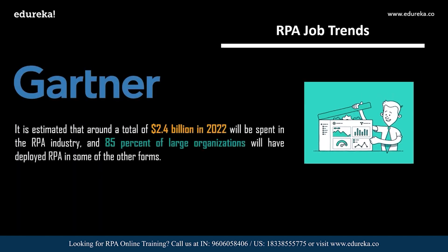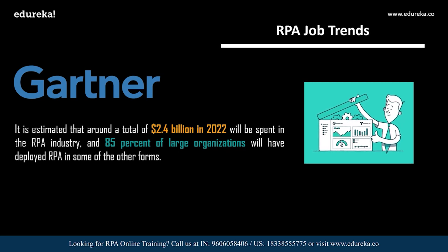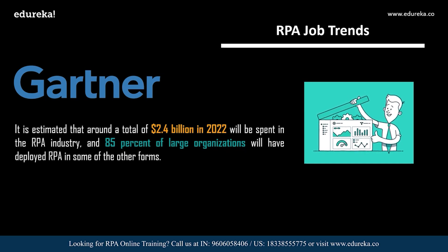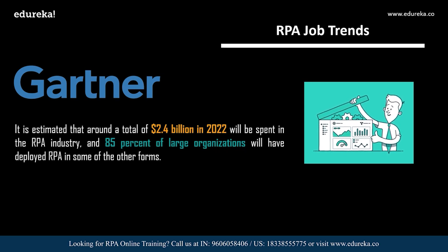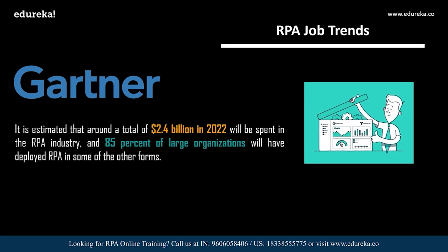According to Gartner, it is estimated that around 2.4 billion US dollars will be spent in the field of RPA by 2022, and also 85% of large organizations will have deployed RPA in some form. All industries are looking for professionals who can quickly adapt RPA technology and automate manual tasks. RPA jobs are going to definitely increase, and companies are looking for professionals who understand how to design automations and speed up their processes.